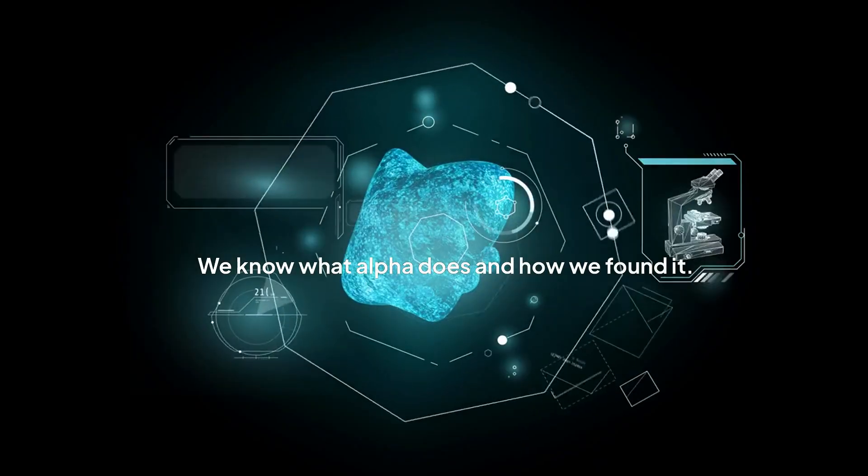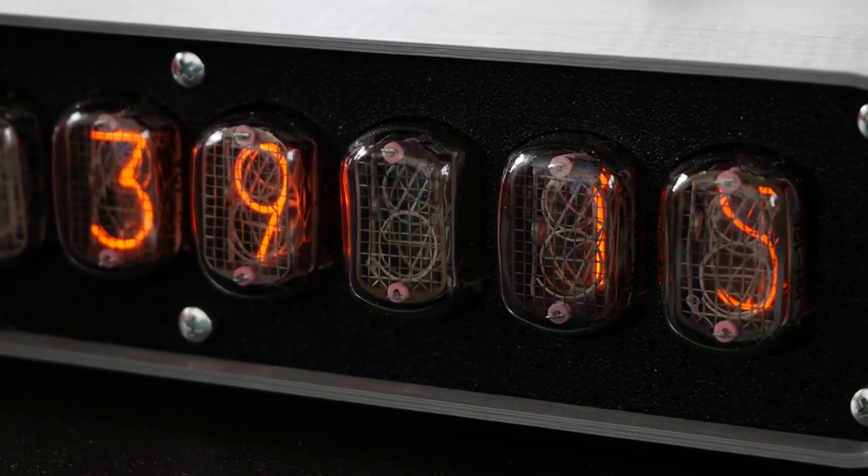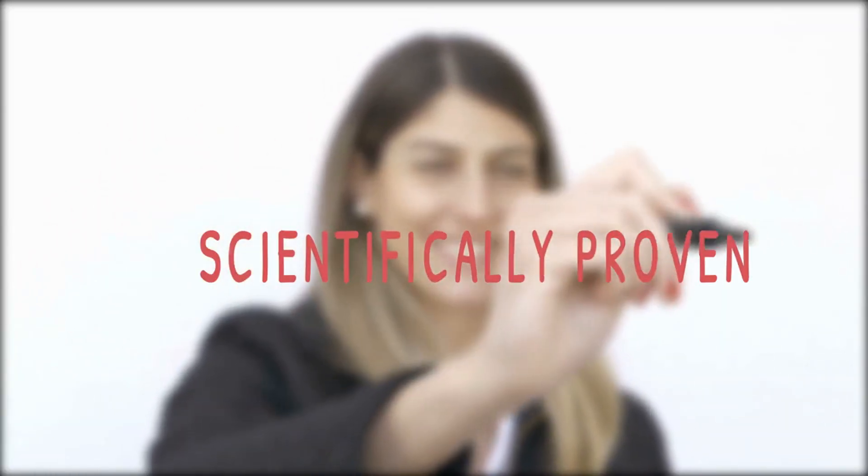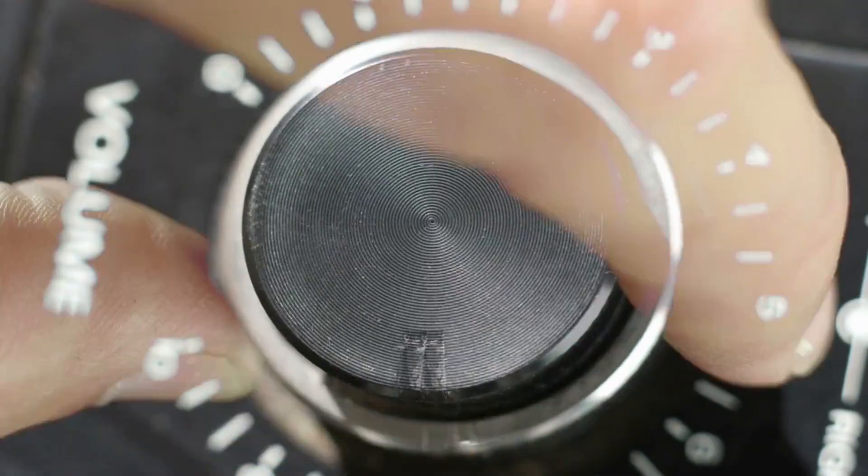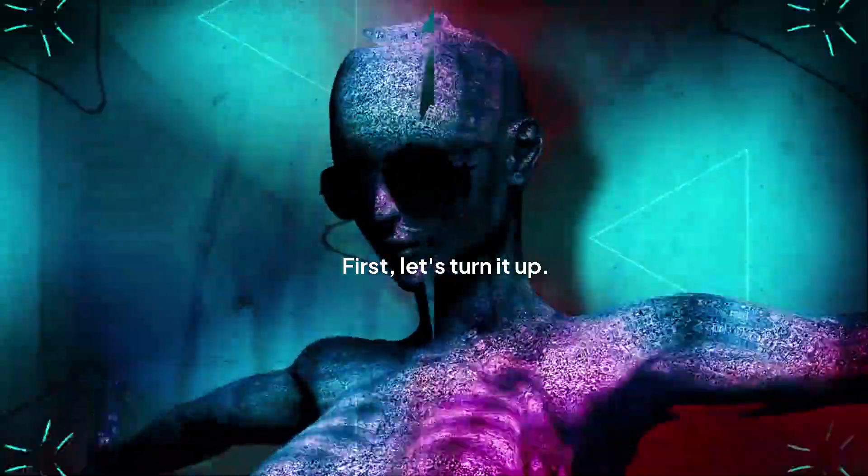We know what alpha does and how we found it. But the truly mind-bending part is this: Why is the value 1/137th so critical? Well, it turns out our existence is balanced on it. This is the fine-tuning argument, and it's one of the most unnerving ideas in science. Let's play a game. What if we could reach out and turn that cosmic volume knob for electromagnetism? First, let's turn it up.